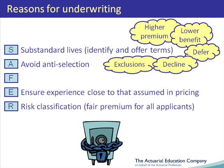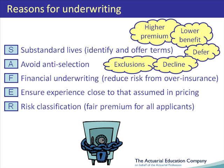Financial underwriting can be used to reduce the risk of over-insurance. For example, imagine a prospective policyholder has an annual income of £15,000 but is applying for a term assurance policy with a sum assured of £1 million. This would seem excessive given his financial circumstances and may indicate that the policyholder knows something that the insurance company does not. The underwriter would therefore be trying to identify such cases.